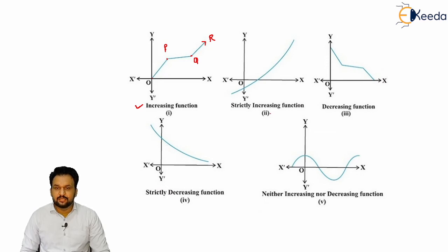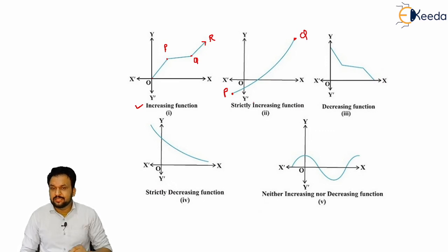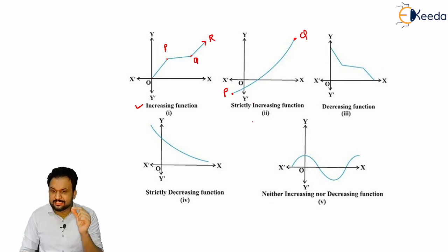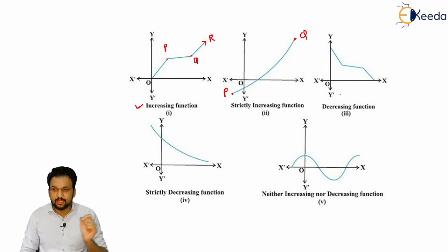In the second part, from point P to Q, the function is gradually increasing — nowhere is it giving a constant value, nowhere is it stopping. It is always giving a maximum increasing value. From P to Q, this function is always strictly increasing. Increasing means somewhere the function gives a constant value or stops increasing, but strictly increasing means it never stops — it is always increasing.